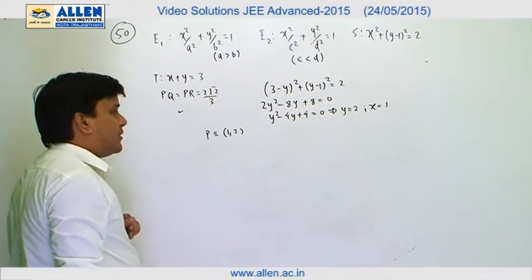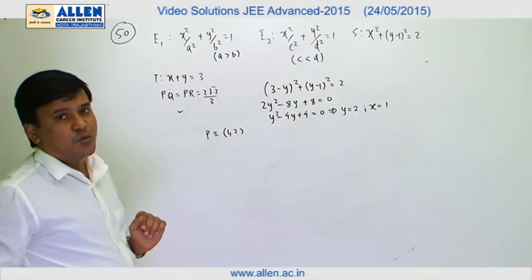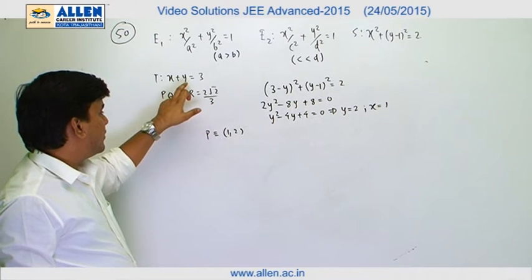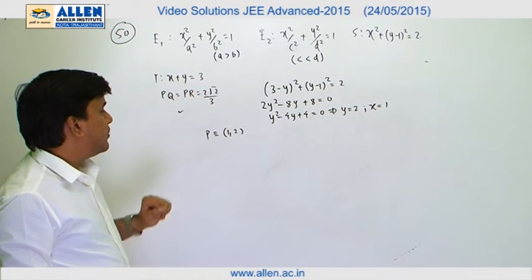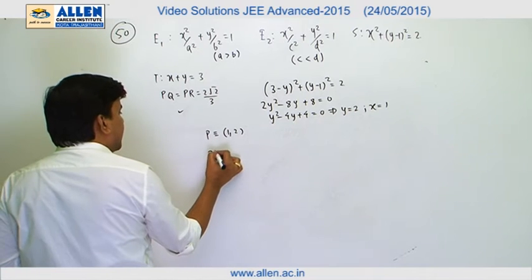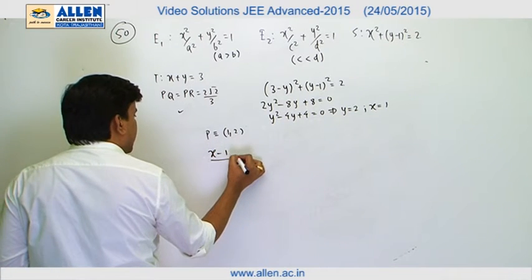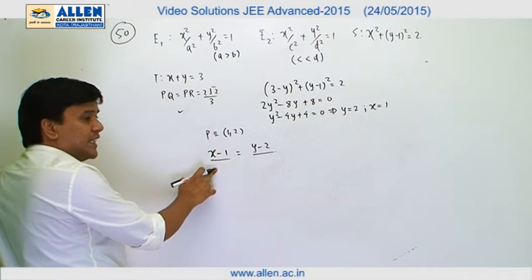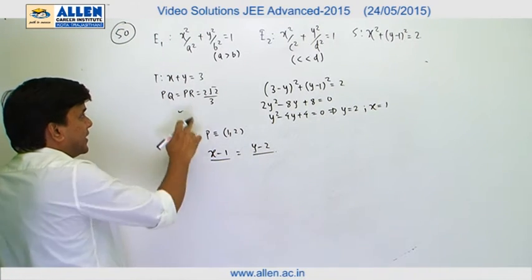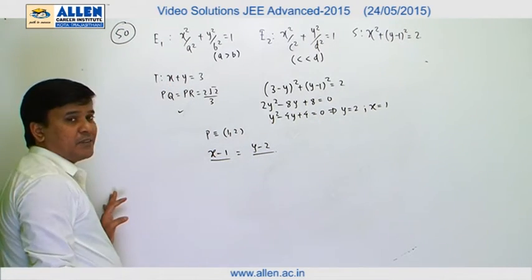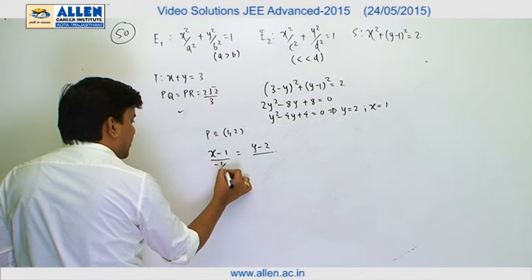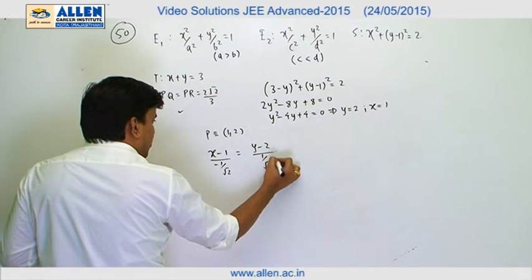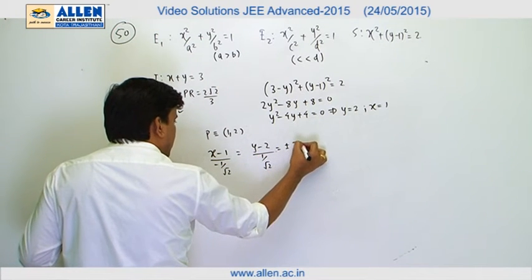Points Q and R are situated at the same distance root 2 upon 3 from P. We write the parametric equation of the line: (x minus 1) / cos θ = (y minus 2) / sin θ. The value of tan θ is minus 1, so cos θ equals minus 1 upon root 2 and sin θ equals 1 upon root 2, and the parameter equals plus or minus 2 root 2 upon 3.